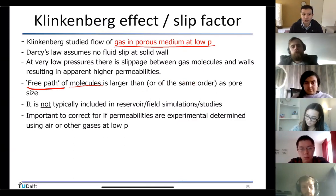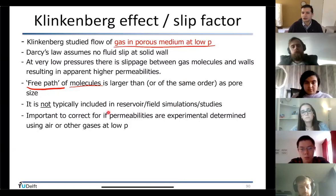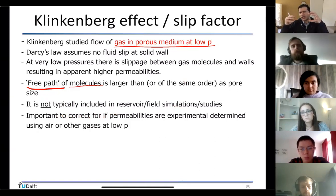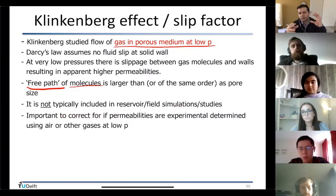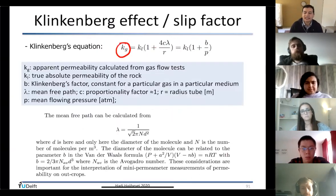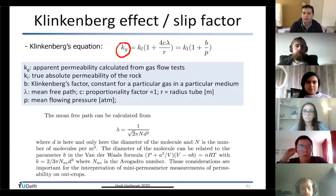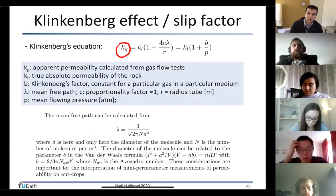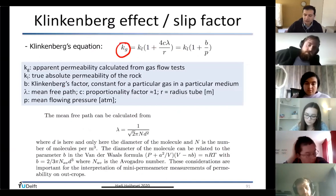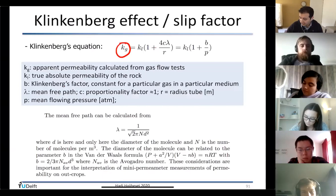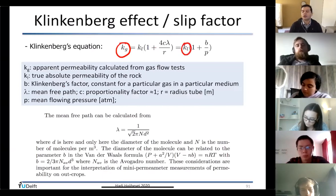The Klinkenberg effect is mainly relevant when the mean free path of gas molecules is larger than or on the same order as pore sizes — at low pressure values. It's not typically a concern for field-scale studies; it is mainly relevant in laboratory experiments, especially with very tight rocks where low-pressure gas is used because it can flow faster.